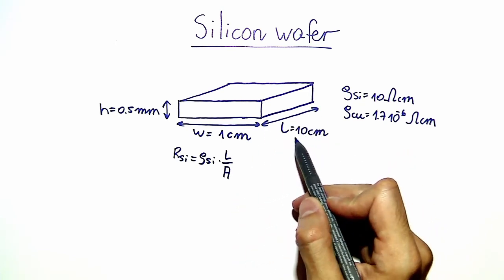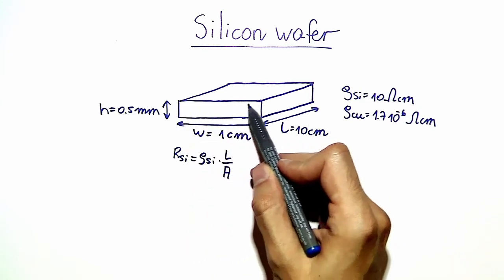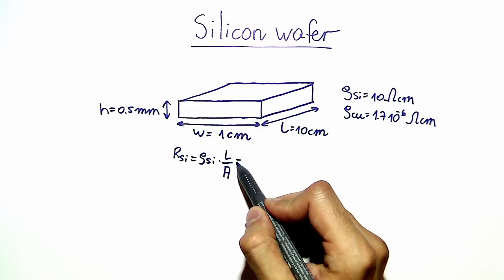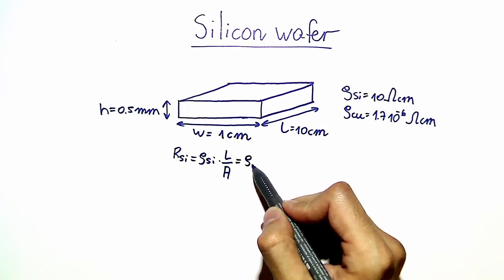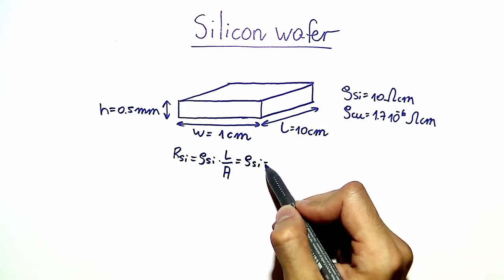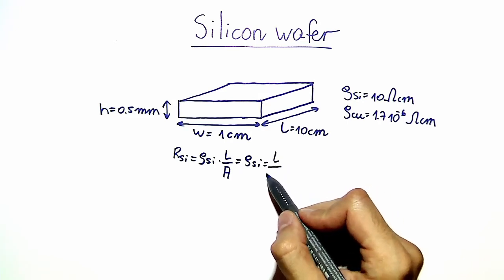The cross-sectional area of the bar is just given by the product of the height h and the width w.